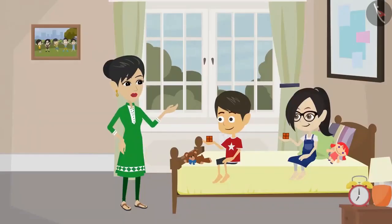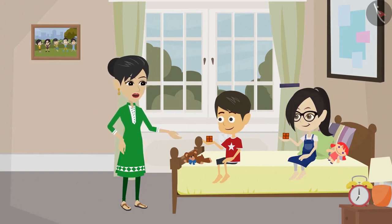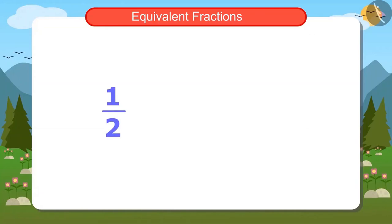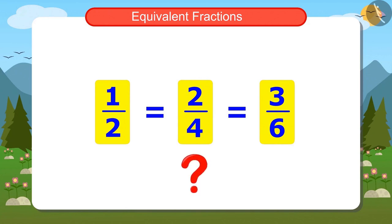Yes, what this means is that we can write half of a chocolate in different ways — like one half, two fourths, three sixths. Mummy, the numbers written are different in these fractions, yet these fractions are showing the same quantity of chocolate. What are such fractions called?